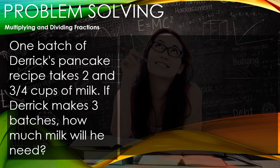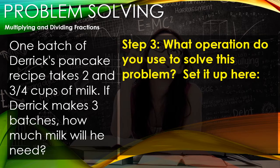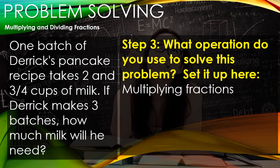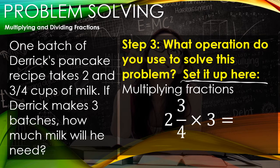In order to do this, the operation we're going to use is multiplying these fractions together. Let's go ahead and set up our fractions: 2 and 3/4 times 3.